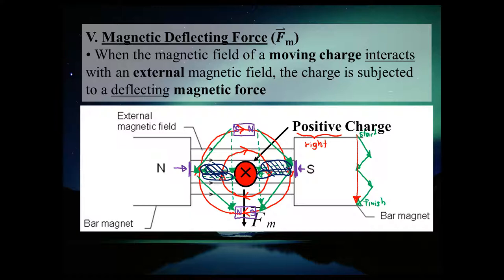Now, if you are completely confused right now, I don't blame you. We made a pretty crazy assumption by treating the single positive charge like a straight current-carrying wire, then talked about imaginary magnets and drew all these vector components. It is a lot of work to figure out that the magnetic deflecting force is down. It turns out we are not going to use this procedure — we're going to use something called the third-hand rule instead.